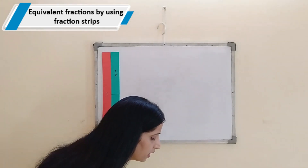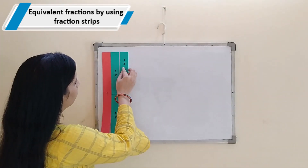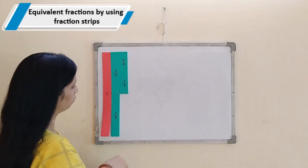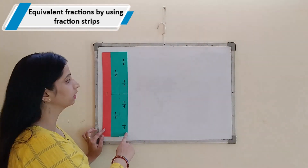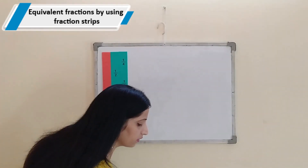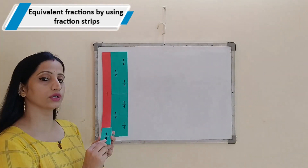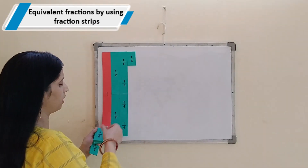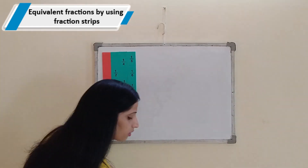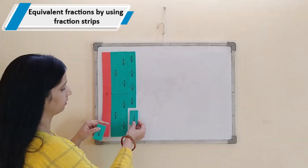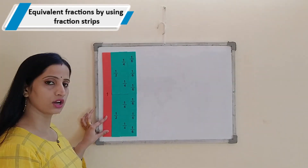Now this has been divided into 4 equal parts. So now each part will represent 1 by 4. 1, 2, 3 and 4. So 4 one-fourths will make a whole. Now this whole has been divided into 6 equal parts. So 6 one-sixths will make a whole.